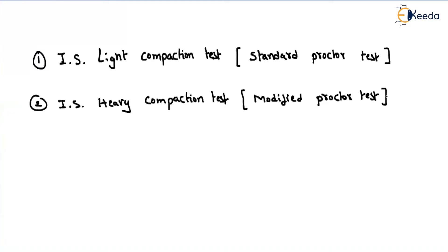Here we will use a cylindrical shape of soil mass, compact the soil, and measure how dry density is changing with respect to water content. Depending upon the type of test, we will use different types of hammers, different number of layers, and different heights of fall. For the heavy test, the weight of the hammer is 4.90 kg; for the light test, it is 2.60 kg.